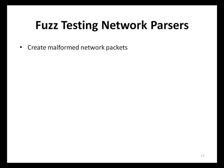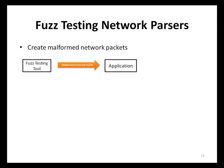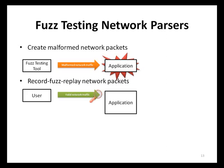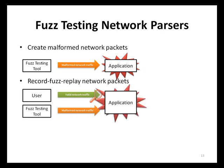The first method of network parser fuzz testing is to create malformed packets that conform to the data format expected by an application, and then send those malformed packets over a network to the application. A fuzz testing tool creates malformed data and sends it directly to the application over a network. The second method is to record valid network packets and then send or replay malformed network packets to an application and observe how the application reacts. Testers first record valid network packets using a tool such as a network packet sniffer, then the captured data is malformed in some way and resent or replayed back to the application.